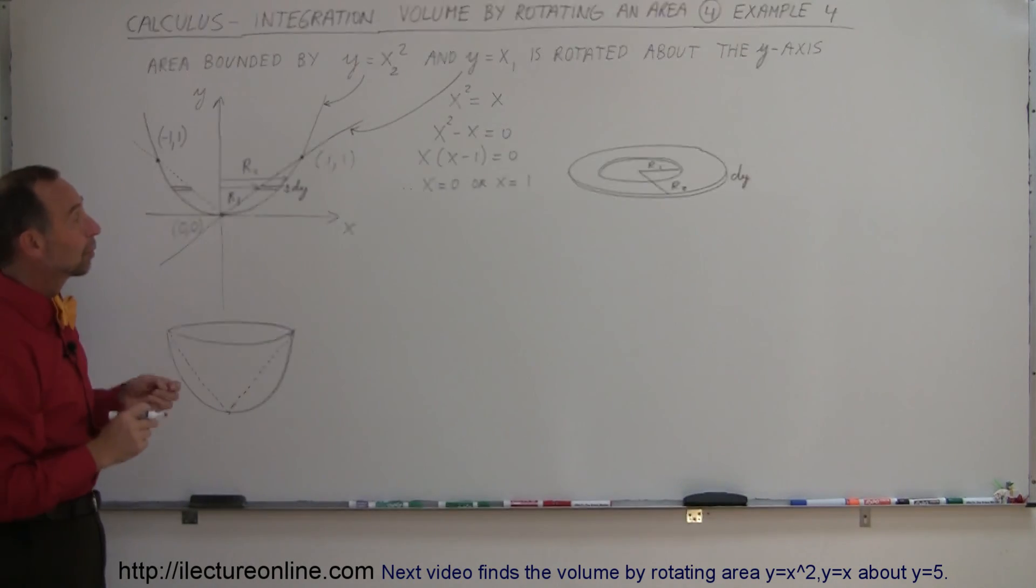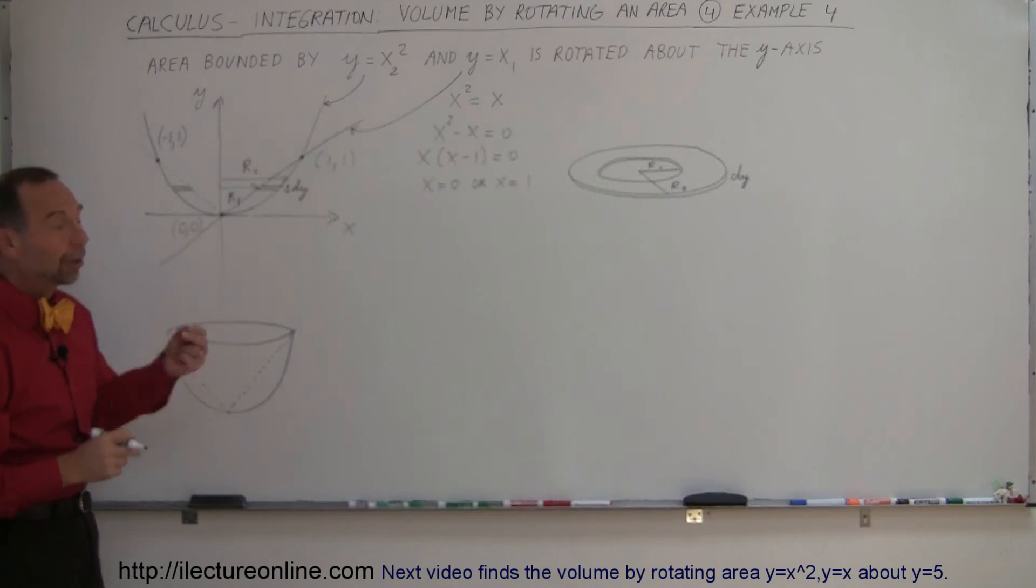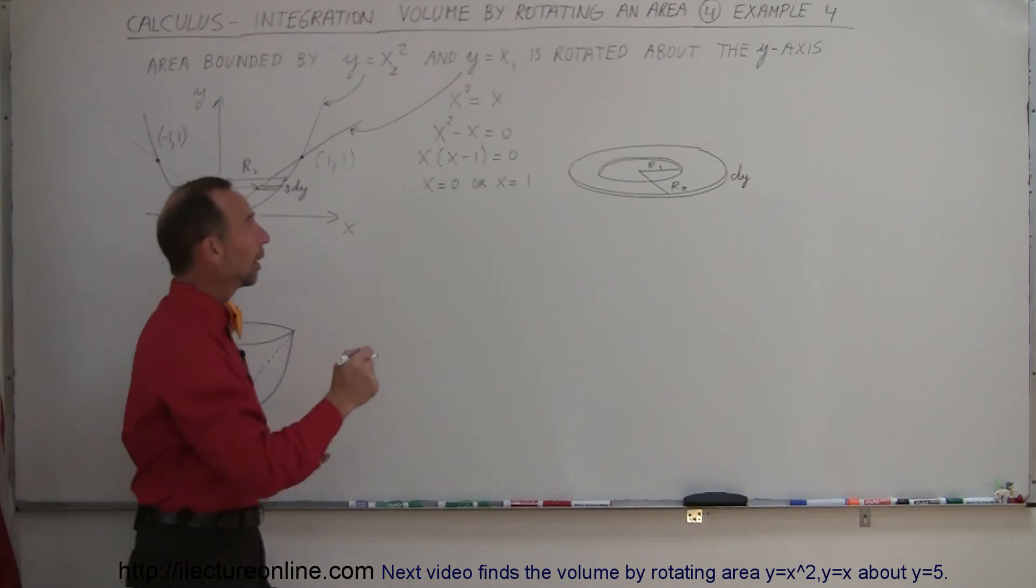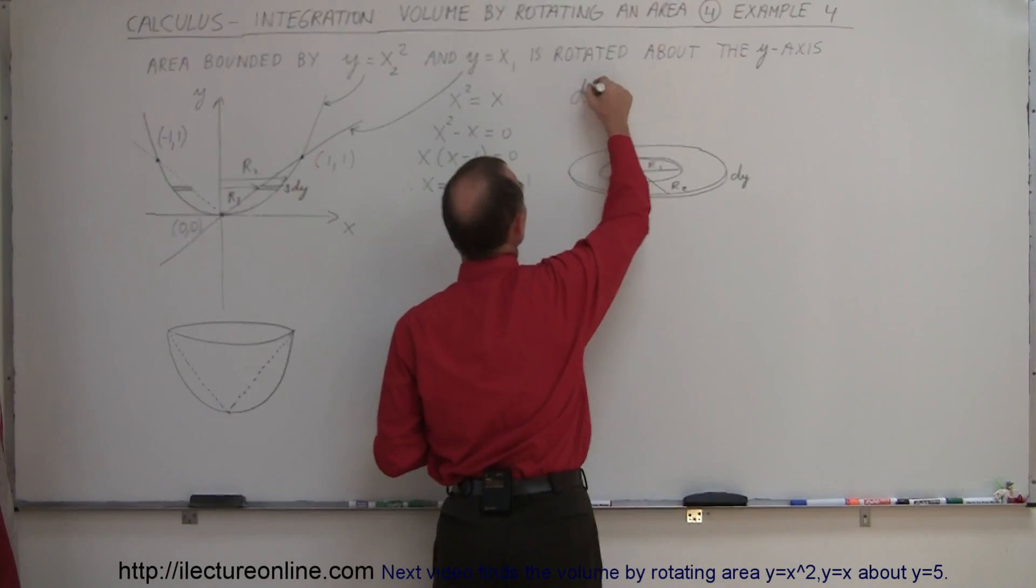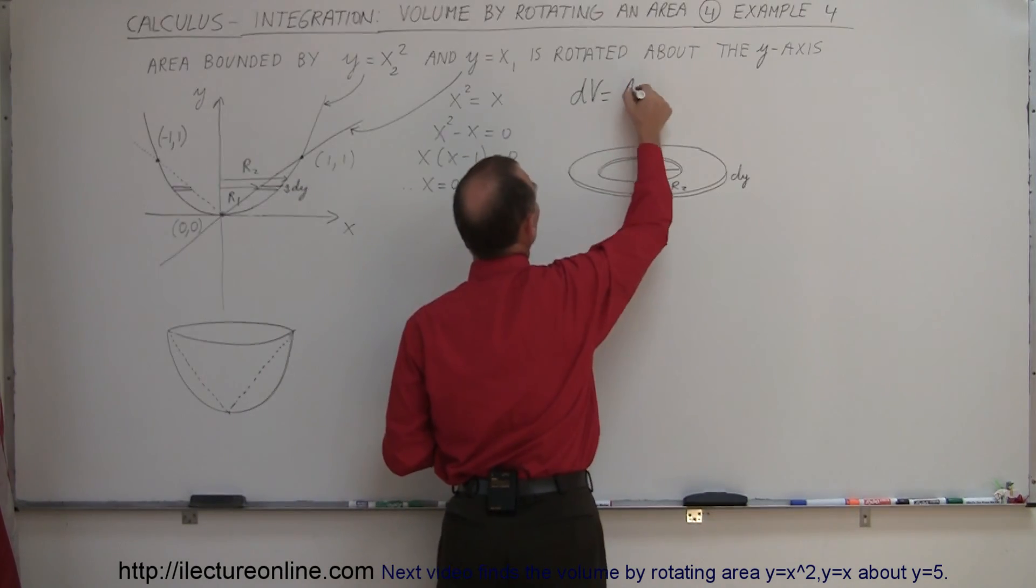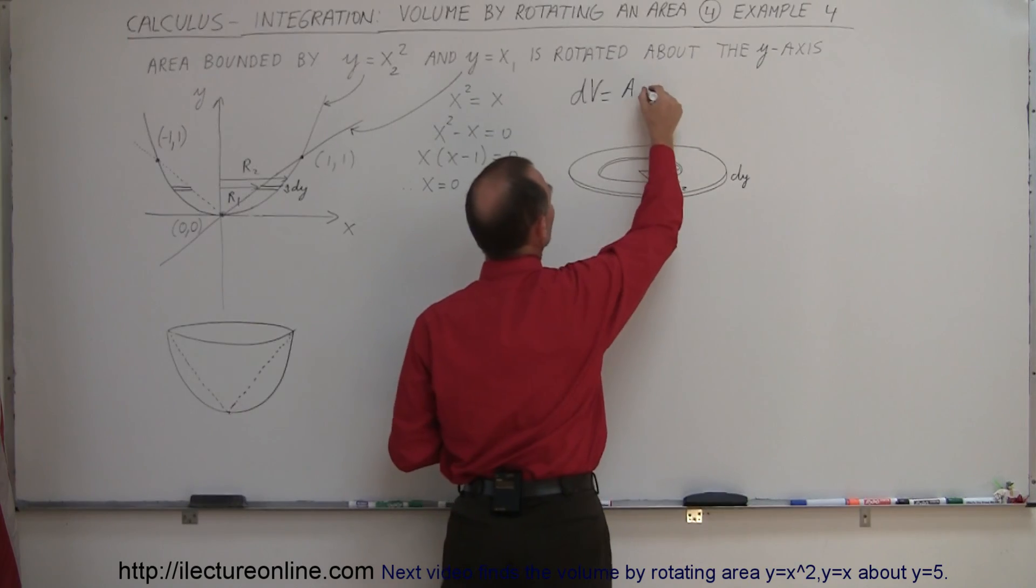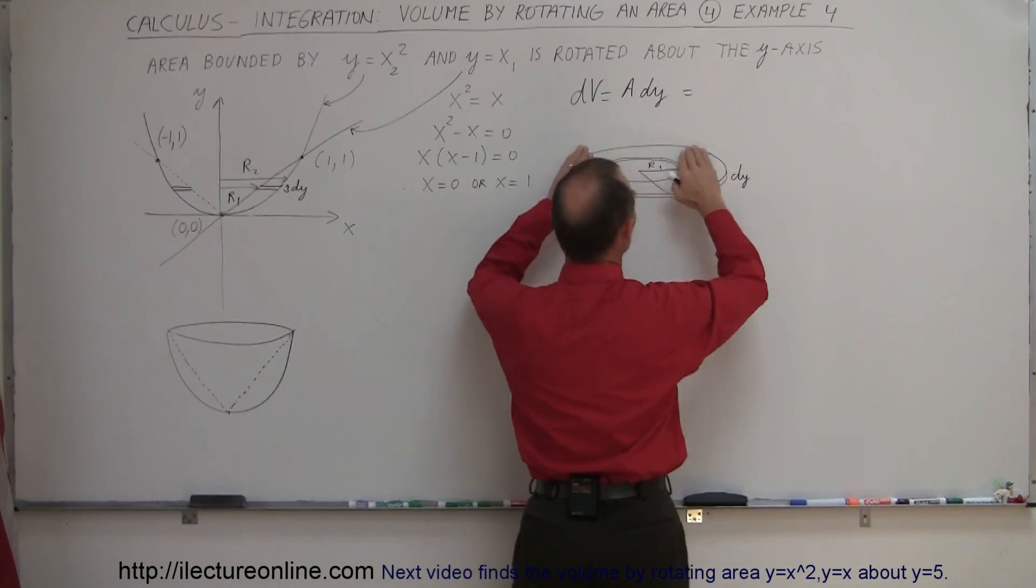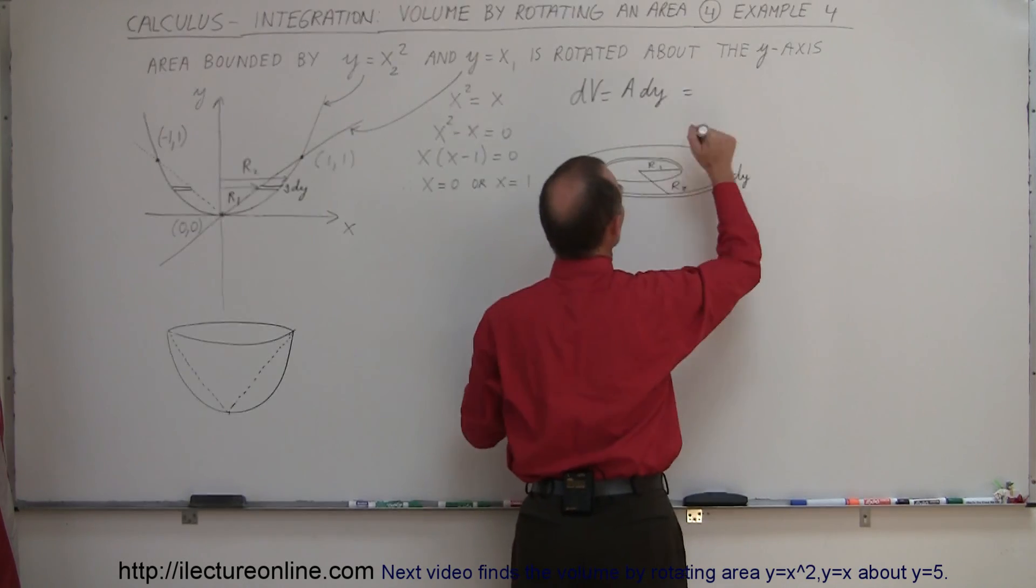So now what we can do is we can replace r1 and r2 by x1 and x2. So our volume then, our dV, which is equal to the surface area of this washer times the thickness dy.